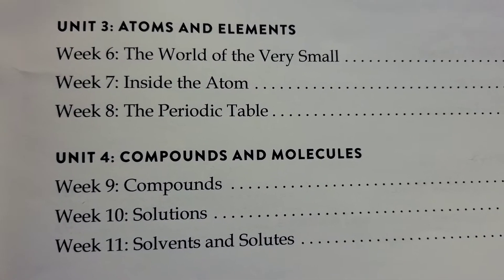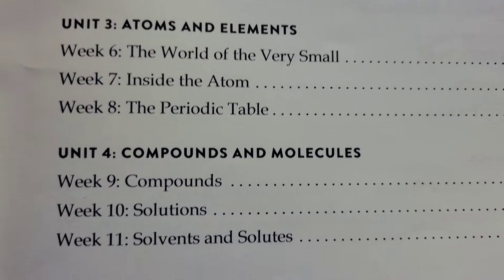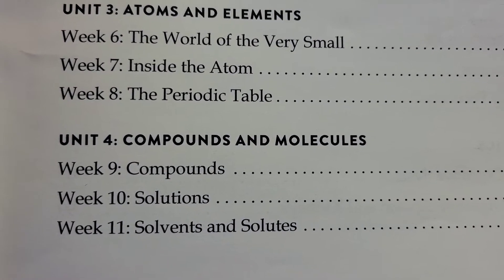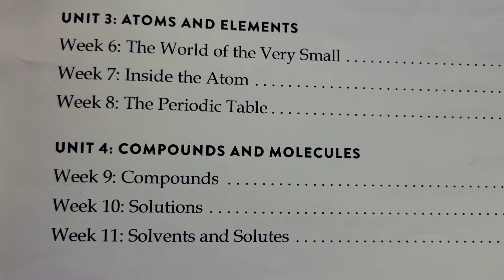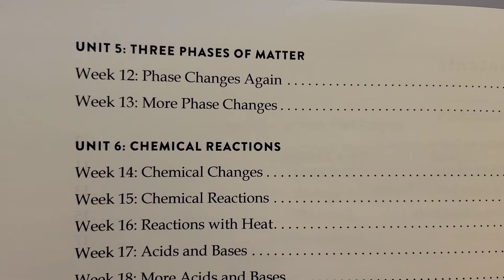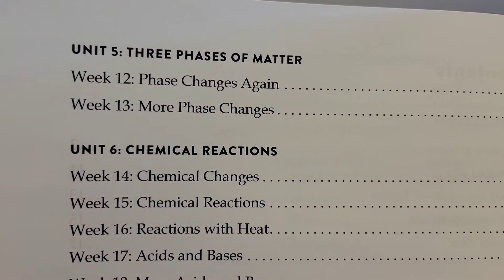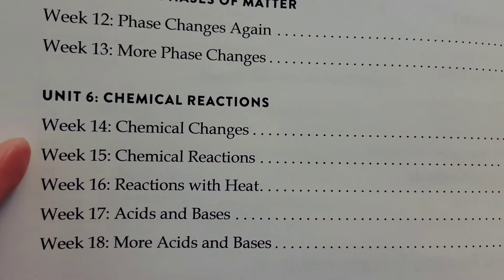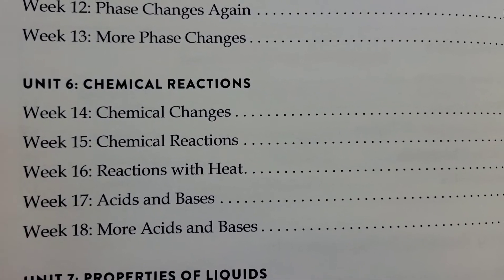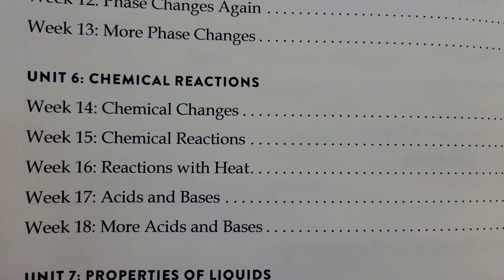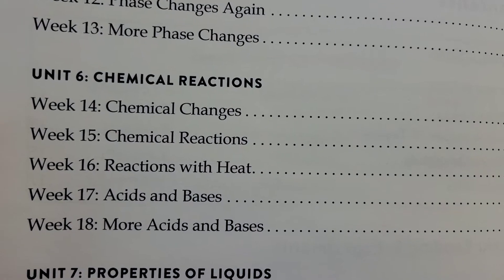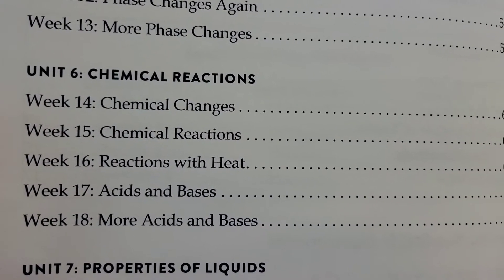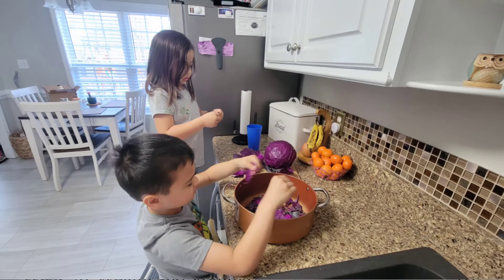In Unit 4, we'll learn about Compounds and Molecules — Week 9 Compounds, Week 10 Solutions, Week 11 Solvents and Solutes. Unit 5 is the 3 Phases of Matter. Unit 6 is Chemical Reactions — Week 14 Chemical Changes, Chemical Reactions, Reactions with Heat, Acids, and Bases. We did an experiment here with red cabbage and vinegar.